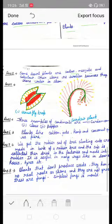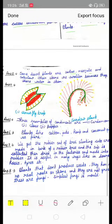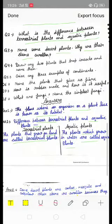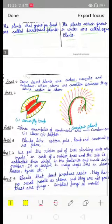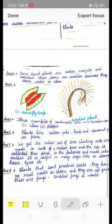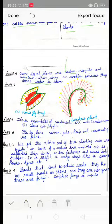Question number four is draw any two plants that trap insects and name them. So here is first Venus flytrap and second is sundew plant.